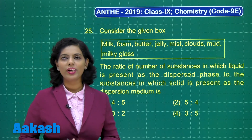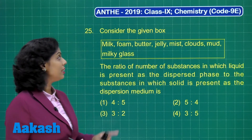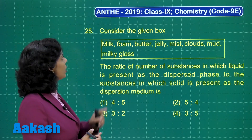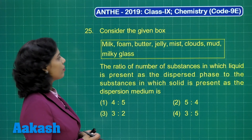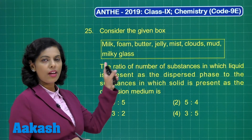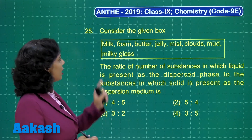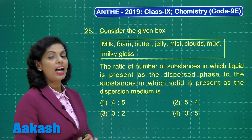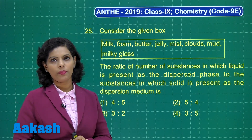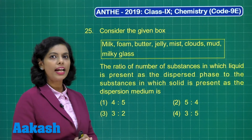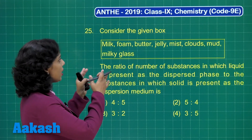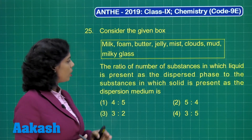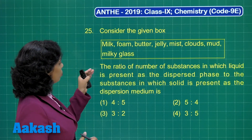Now students, let's begin with question number 25. Consider the given box. We have this box with a number of substances given here. If you look at this, you will identify these are all colloids. What we need to do?